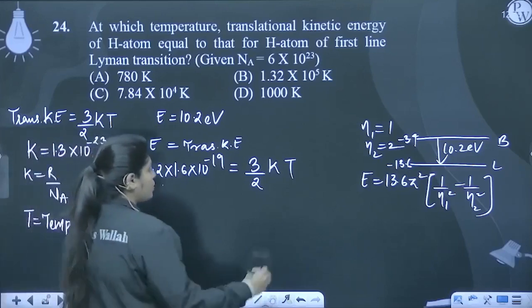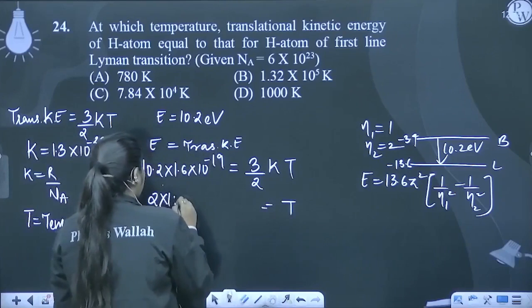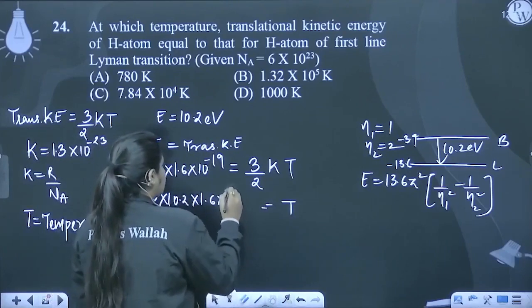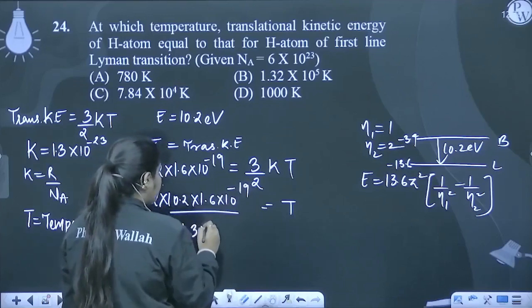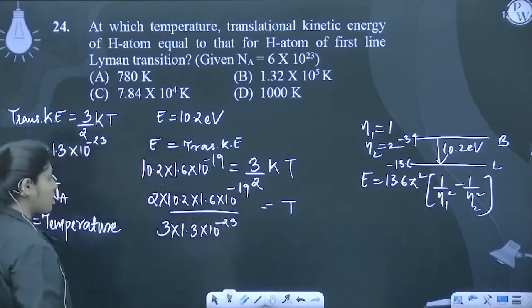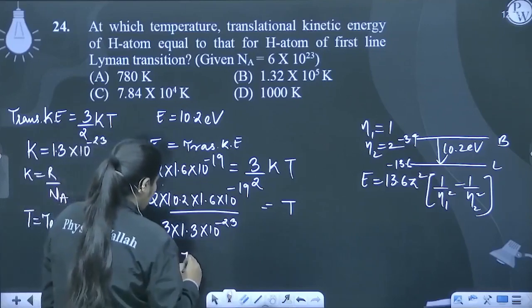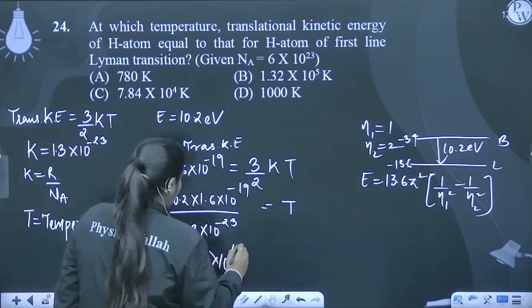So temperature, what do we need to do? 2 into 10.2 into 1.6 into 10 to the power minus 19 upon 3 into 1.3 into 10 to the power minus 23. When we solve this whole value, our answer will be 7.84 into 10 to the power 4 Kelvin.